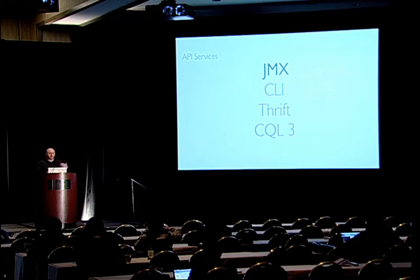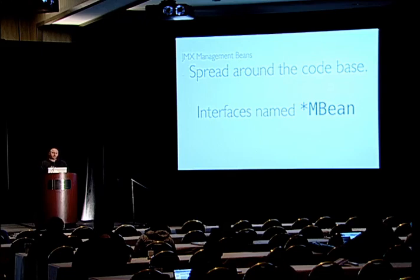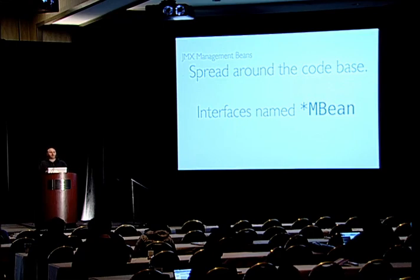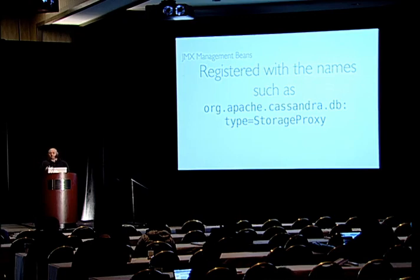At the services level, the API has JMX, the command line interface, Thrift, and CQL3. The JMX interface is really important — if you're doing ops or dev and want to know what Cassandra is doing, get a handle on what JMX provides. The management MBeans exposed are implemented all around the code base, not in a single package. They all implement interfaces ending in MBean and are implemented on the class of the thing they're exposing management for. For example, there's a StorageProxy class with a StorageProxyMBean that registers as org.apache.cassandra.db.StorageProxy.